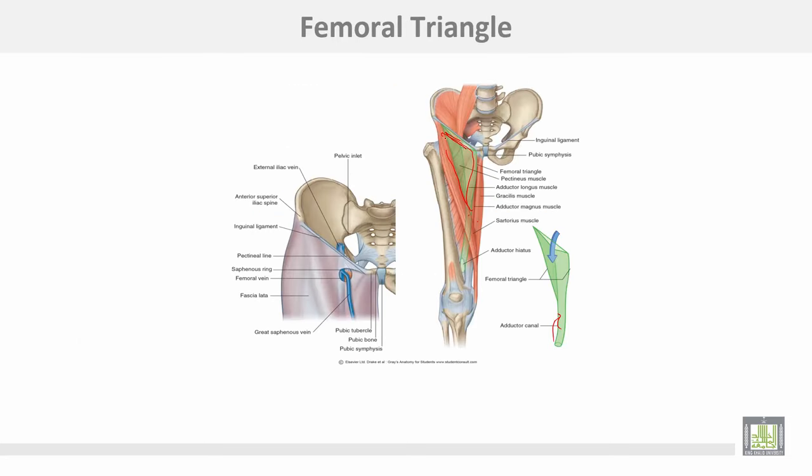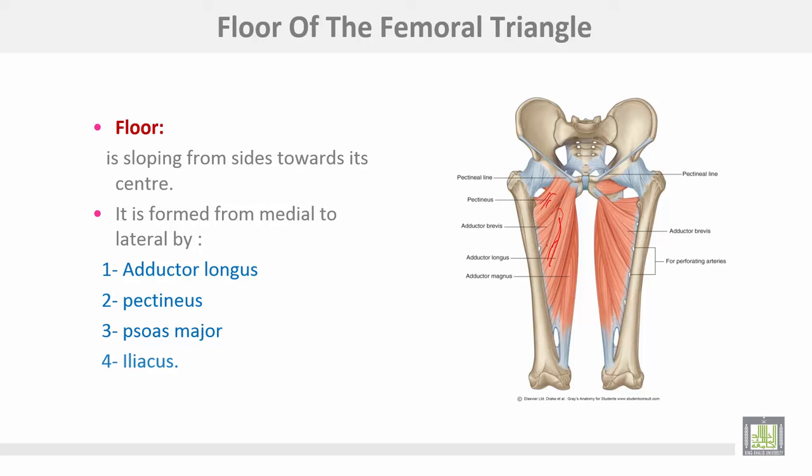The femoral triangle is an inverted triangle; the apex continues downwards with the adductor canal. The floor of the femoral triangle is formed by many muscles, from medial to lateral: adductor longus muscle, pectineus muscle, then psoas major muscle, and iliacus.